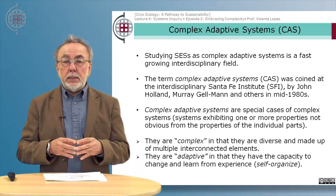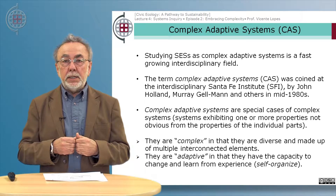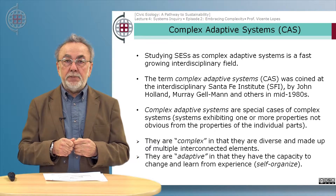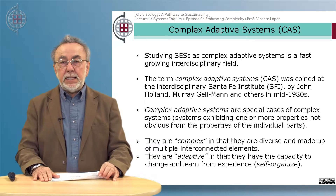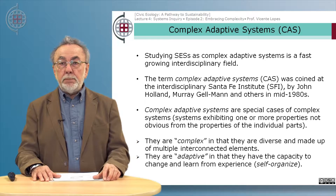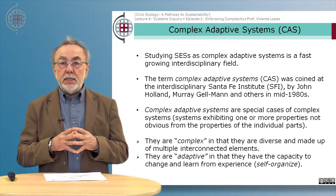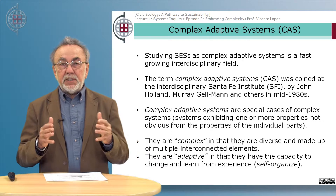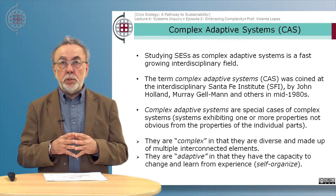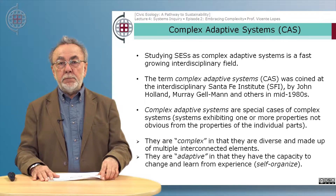The study of social ecological systems assumes that social ecological systems are complex adaptive systems. This perspective is a fast-growing interdisciplinary field of inquiry. The term complex adaptive systems, also referred to as CAS, was coined at the interdisciplinary Santa Fe Institute in New Mexico by John Holland and Murray Gell-Mann and others in the mid-1980s, when many scientists from different fields and different parts of the world were invited to further develop the field.